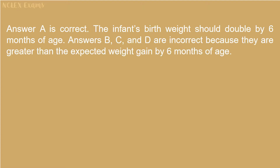Answer A is correct. The infant's birth weight should double by 6 months of age, so 7 pounds doubled equals 14 pounds. Answers B, C, and D are incorrect because they are greater than the expected weight gain by 6 months of age.